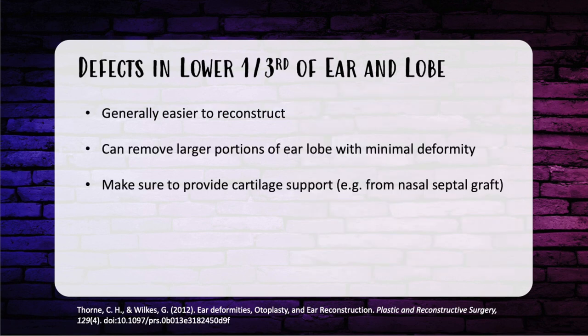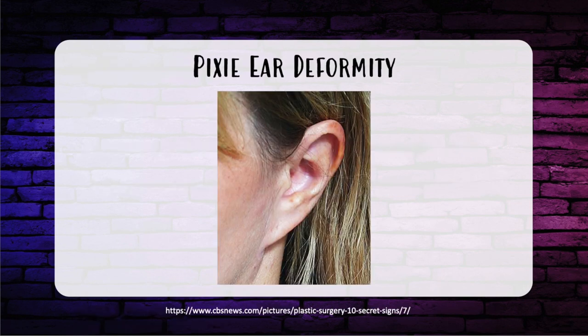Lower third or lobule defects are usually easier to reconstruct because of pliability and laxity. Up to 50% of the earlobe may be removed by wedge resection with minimal deformity. For total earlobe reconstruction, use a composite graft for structure, even though earlobes don't naturally contain cartilage. Lastly, a pixie ear is a pulled or tethered earlobe that appears attached to the cheek rather than free-hanging — it develops after facelift surgery when too much skin is removed, causing the facelift skin to pull tension on the earlobe.